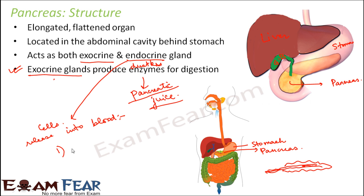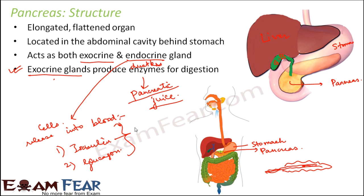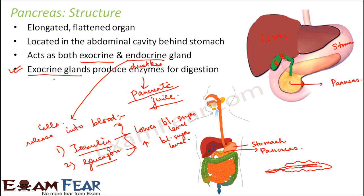The hormones released directly into the blood by cells of the pancreas include insulin and glucagon. Insulin helps to lower the blood sugar level, whereas glucagon helps to increase the blood sugar level. Maintaining a proper balance between insulin and glucagon helps to regulate correct sugar levels. So the endocrine part of pancreas regulates blood sugar, while the exocrine part produces pancreatic juice crucial for digestion.